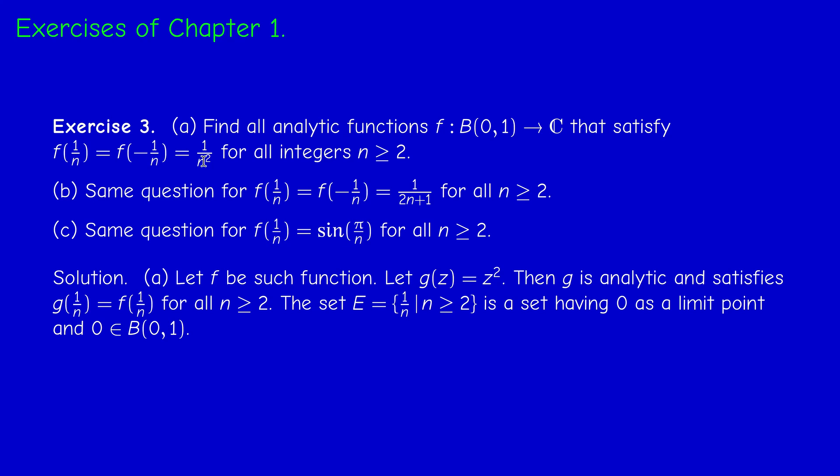So the principle of analytic continuation, since the unit disk is connected, tells us that F and G coincide. So remember that the principle of analytic continuation is actually a uniqueness result. So we conclude that F equals G on the unit disk. So there is only a unique function satisfying this requirement. It's the square function.